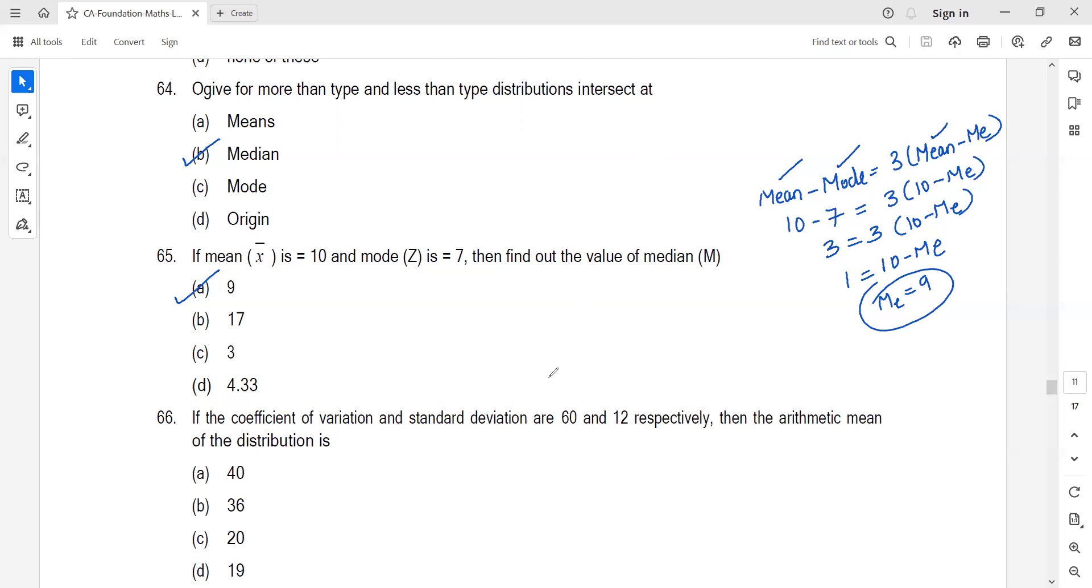If coefficient of variation and standard deviation are given, CV is standard deviation upon mean into 100. CV is 60, standard deviation is 12. Mean is what we need to find. Solving: mean equals 12 by 60 into 100, which is 20. That's option C.